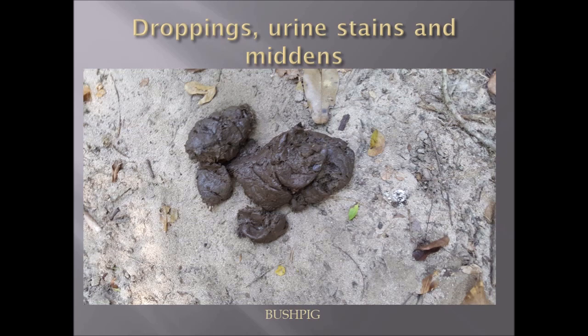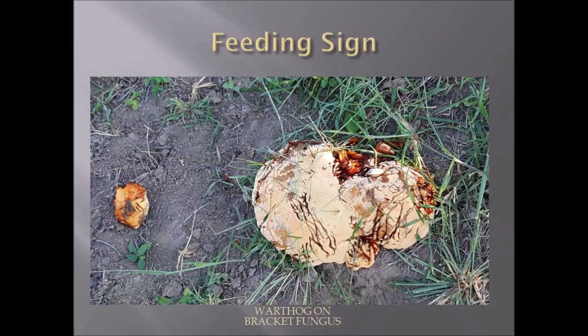Bushpig scat is quite sloppy. They usually feed on various kinds of vegetable matter, although they are omnivores, and tend to produce fairly foul-smelling droppings that are not as well formed as warthog.